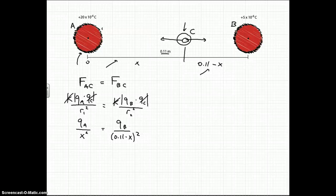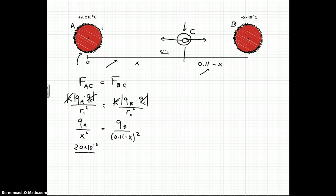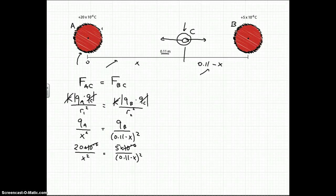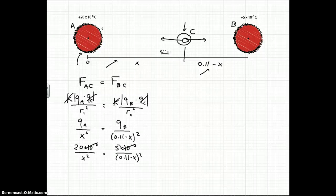So from there, we can plug in our charges and we'll see that something else cancels. So we have 20 times 10 to the negative 6 over x squared. And that's equal to 5 times 10 to the negative 6 over 0.11 minus x, the whole thing squared. Notice that the times 10 to the negative 6 cancel out. So that's great for us because we don't have to worry about all those exponents there.